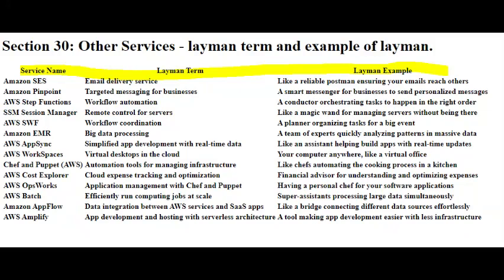AWS Step Functions — Workflow Automation. It acts like a conductor organizing different tasks in a specific order, like a symphony, for your digital processes.